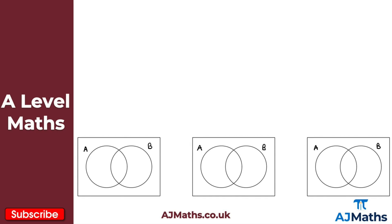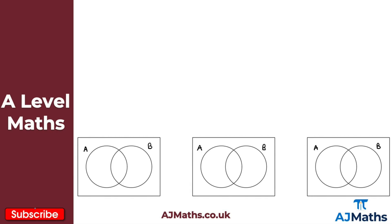So let's take a look at the notation now. To begin with, let's look at the intersection — the probability of A intersection B. It looks almost like an N. This represents the intersection, and this is when both A and B occur.